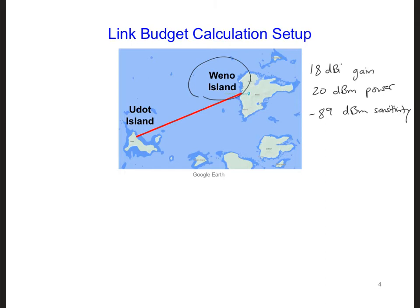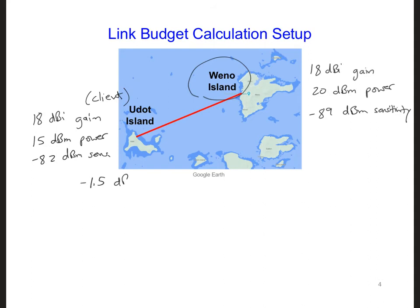Then the school on Udach, which we'll call the client, is connected also to a Yagi-Uda antenna. It also has 18 dBi of gain, and a slightly lower transmitting power of 15 dBm, and also not as good of a receiver sensitivity — minus 82 dBm. The cables connected to both antennas are short, so we'll say the cable on each side has minus 1.5 dB loss.